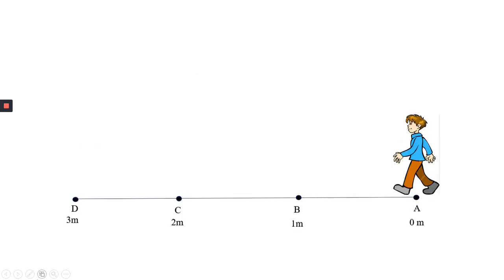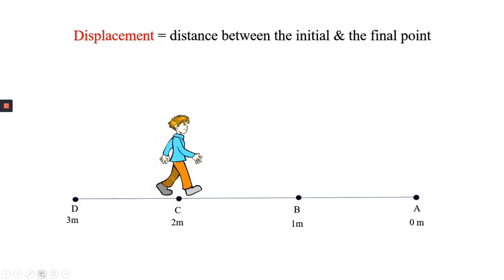Reconsider the example. A boy moves from A to D, 3 meters, and from D to C, 1 meter. Displacement of the boy is equal to distance between the initial point and the final point. A is the initial point, C is the final point. Distance between them is AC, which is equal to 2 meters.